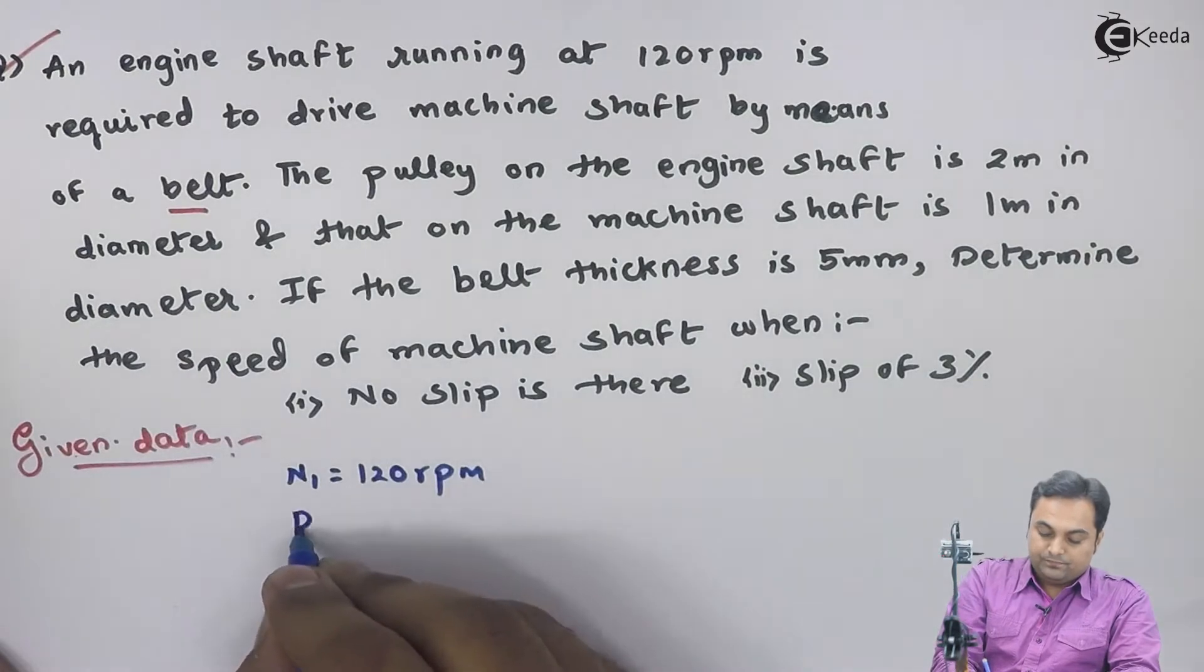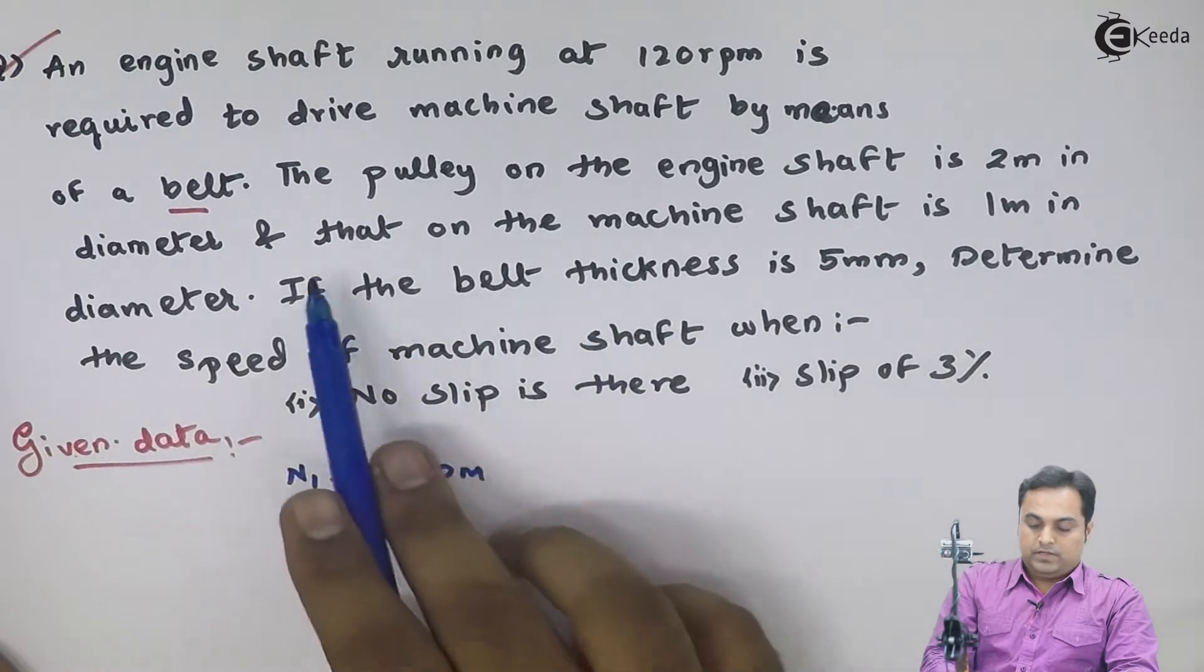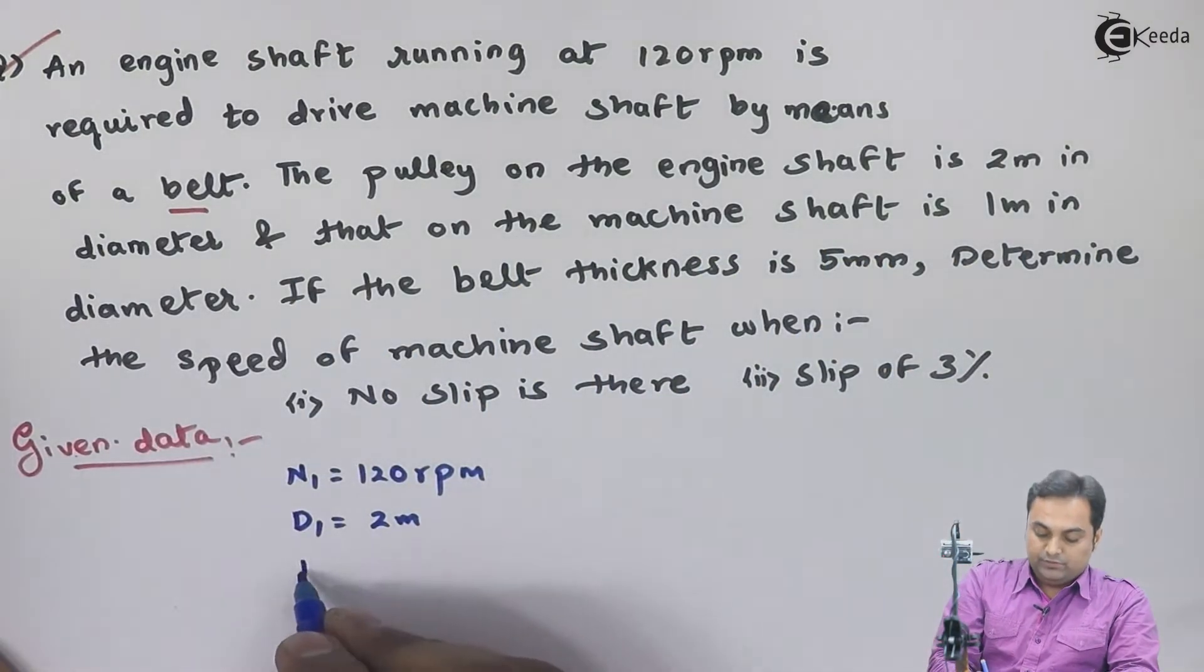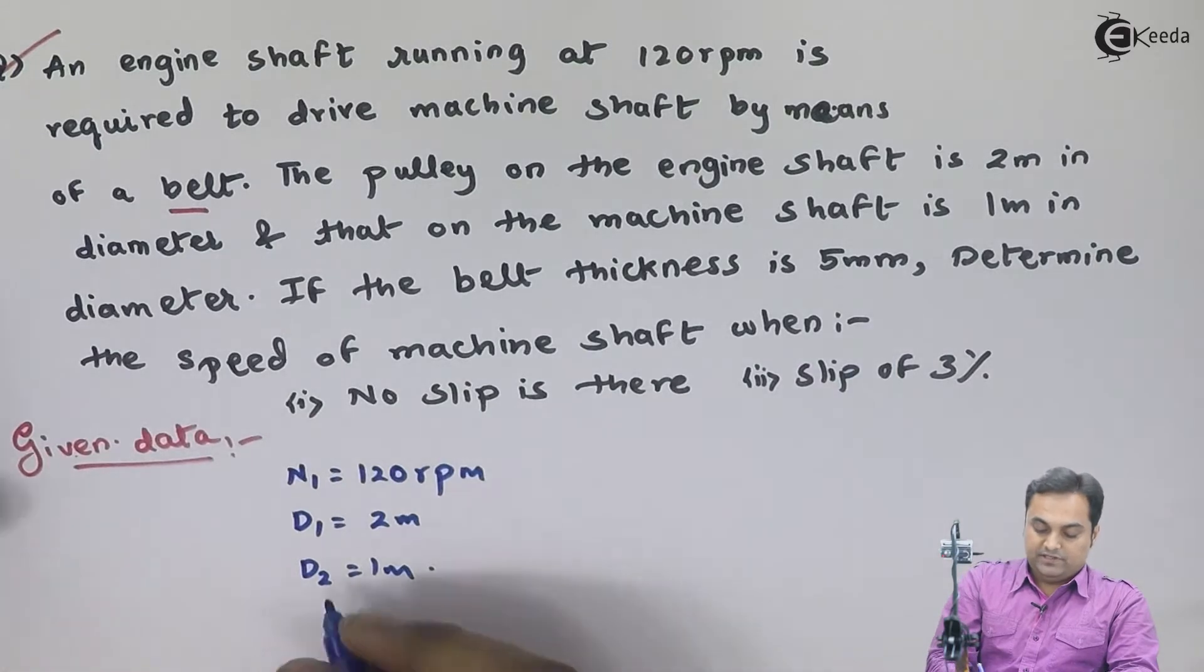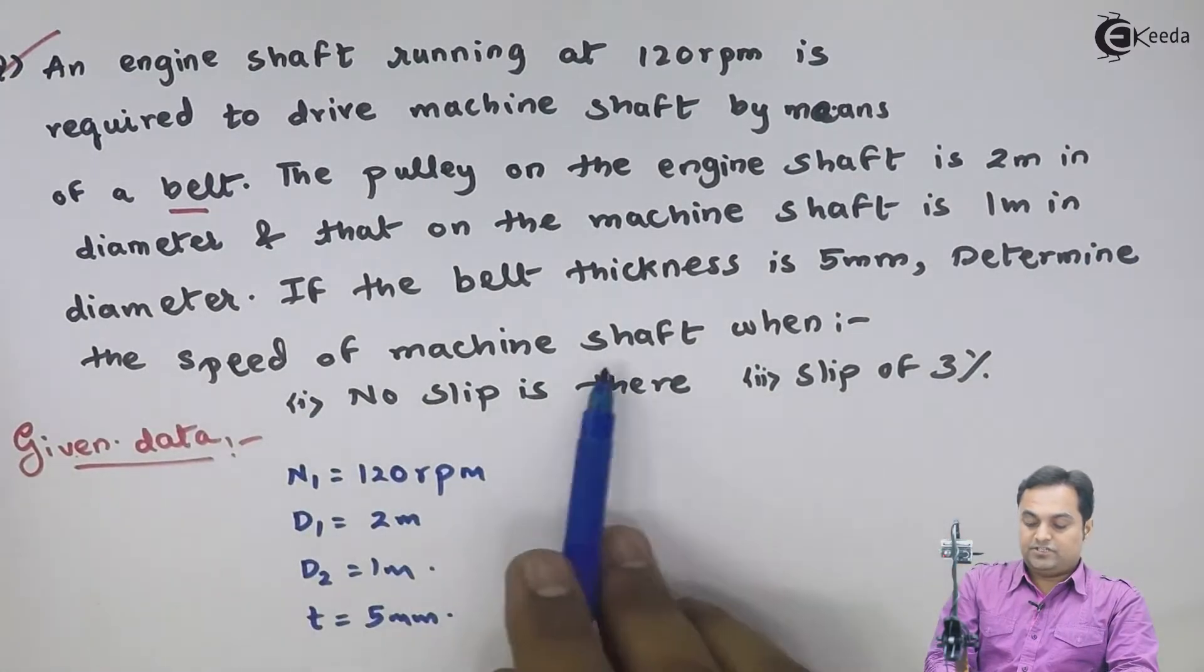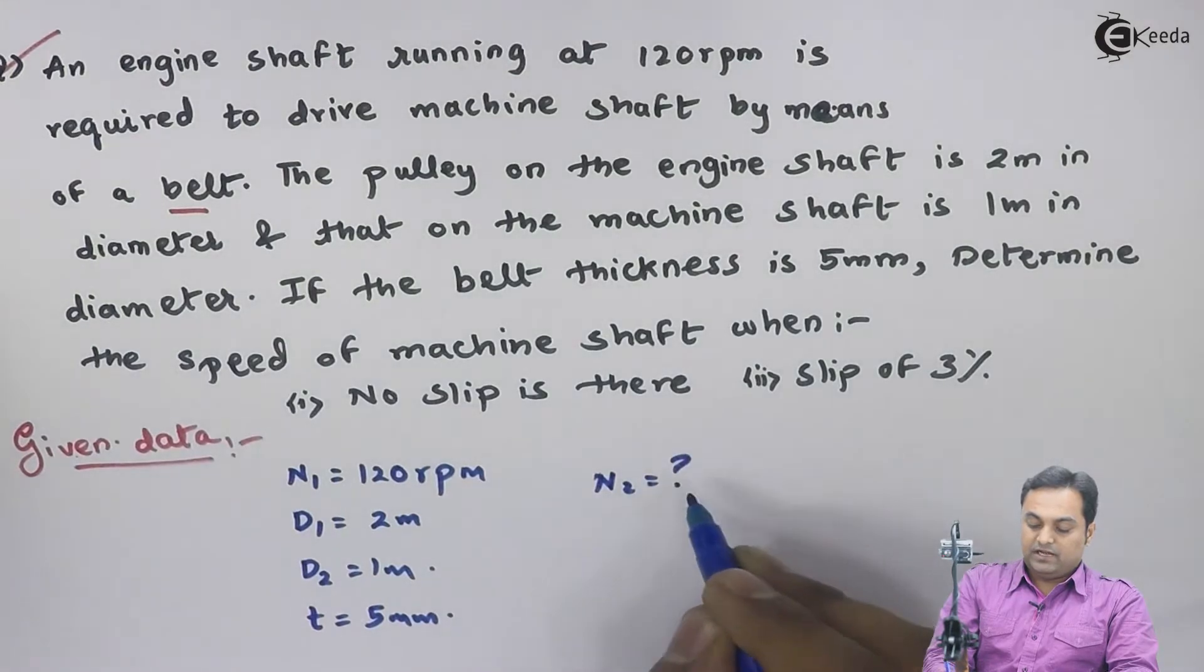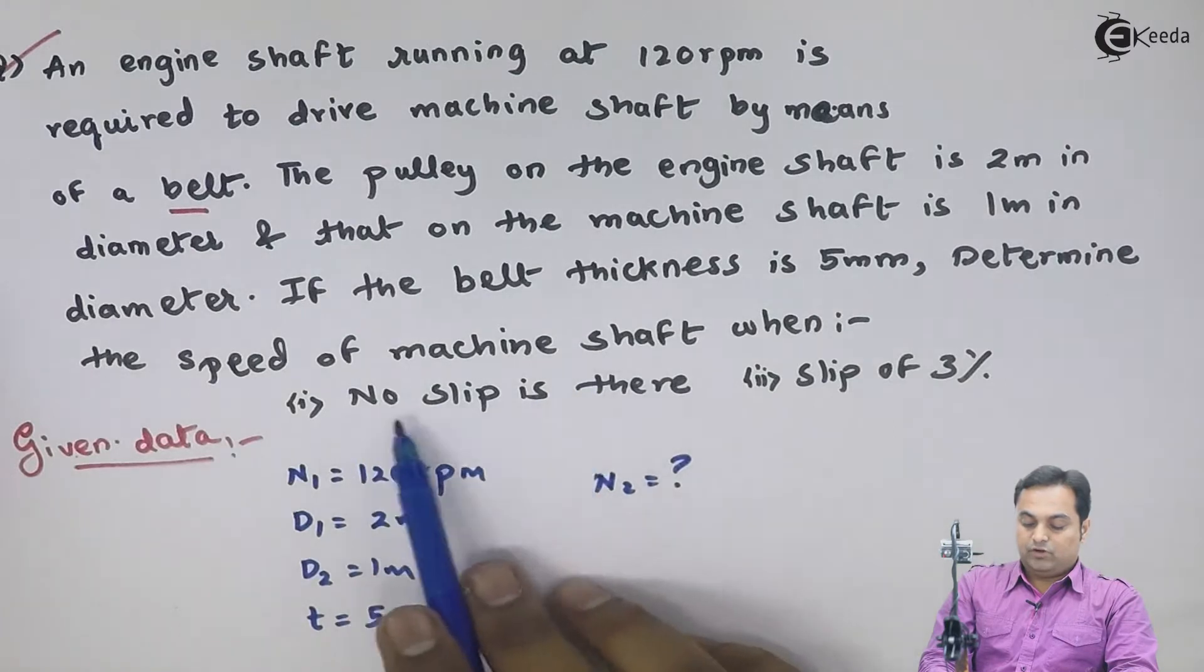And that on the machine shaft is 1 meter in diameter, so d2 is equal to 1 meter. The belt thickness is 5 mm. Determine the speed of machine shaft - we have to calculate the speed of machine shaft, I'll give it as n2. The conditions are of no slip and slip of 3%.